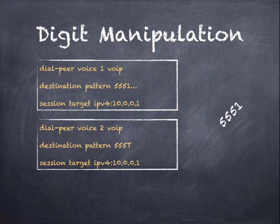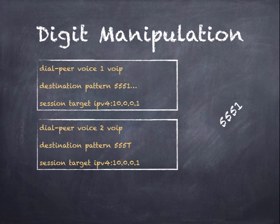The T wildcard matches any number of digits from 0 to 32. If we dialed 555-1, it would not match the first dial peer. The first dial peer might be for reaching a 7-digit number, while the second could reach a 4-digit extension. However, you would have to hit the pound sign to complete the call and match the second dial peer, because T accepts 0 through 32 digits and the router waits until the pound sign is pressed.